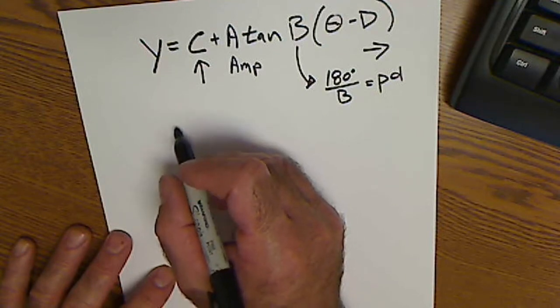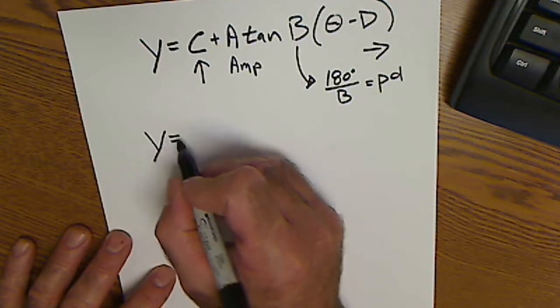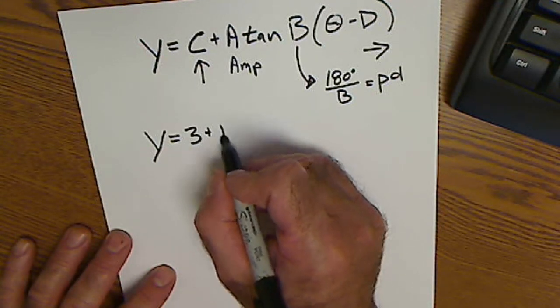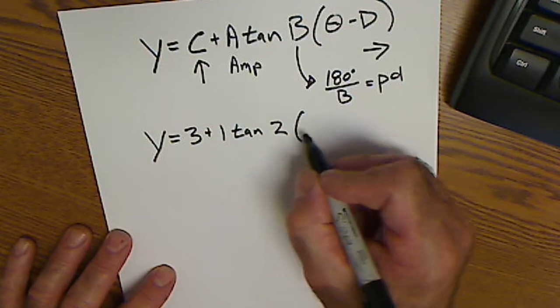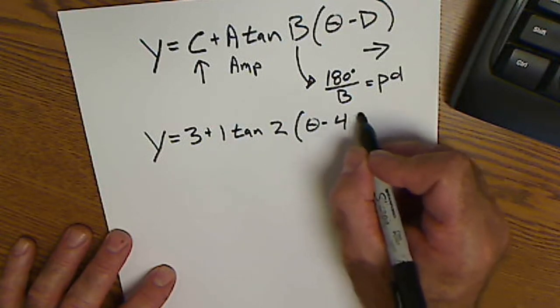Tangent is the hardest graph there is. Let's do an example: y equals 3 plus 1 tangent 2(theta minus 45 degrees).